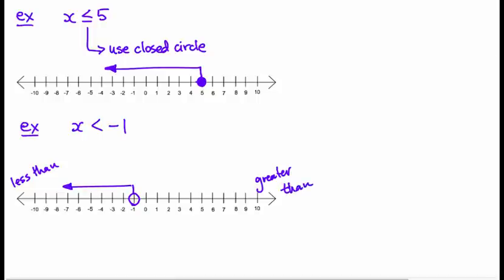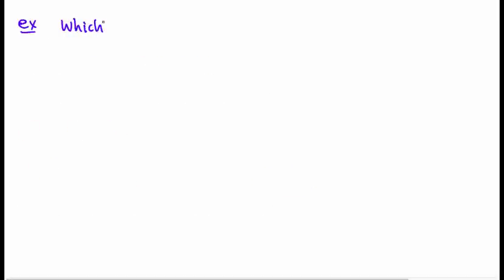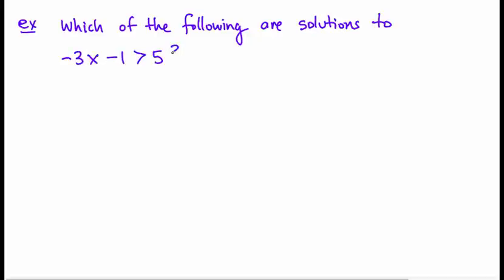Okay, one more example, a little bit of a different type of question, non-graphing. And the question is, which of the following numbers are solutions to negative 3x minus 1 is greater than 5? So here's a little inequality expression, or linear inequality. And I want to know which out of these numbers: 3, 2, 1, 0, minus 1, minus 2, and minus 3, which of these numbers are solutions to this?